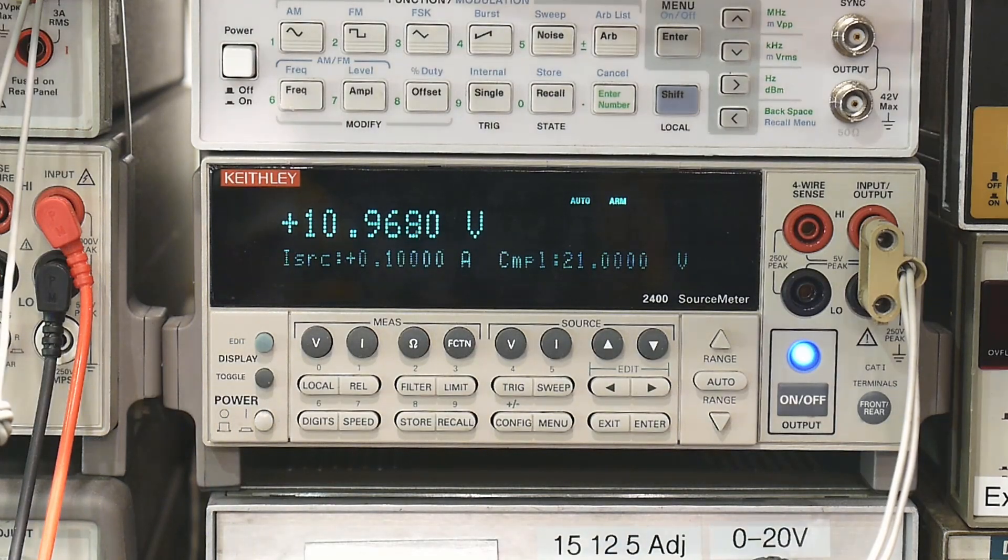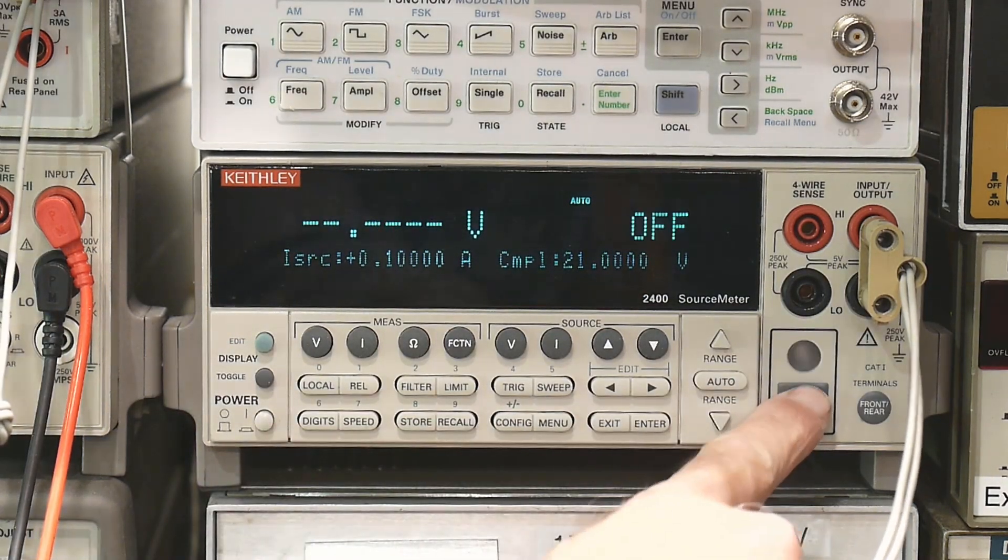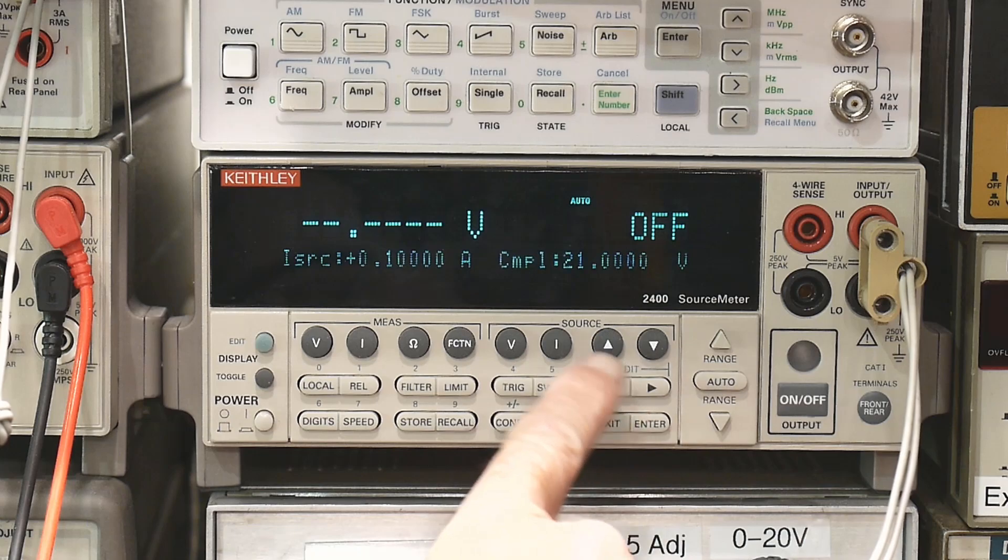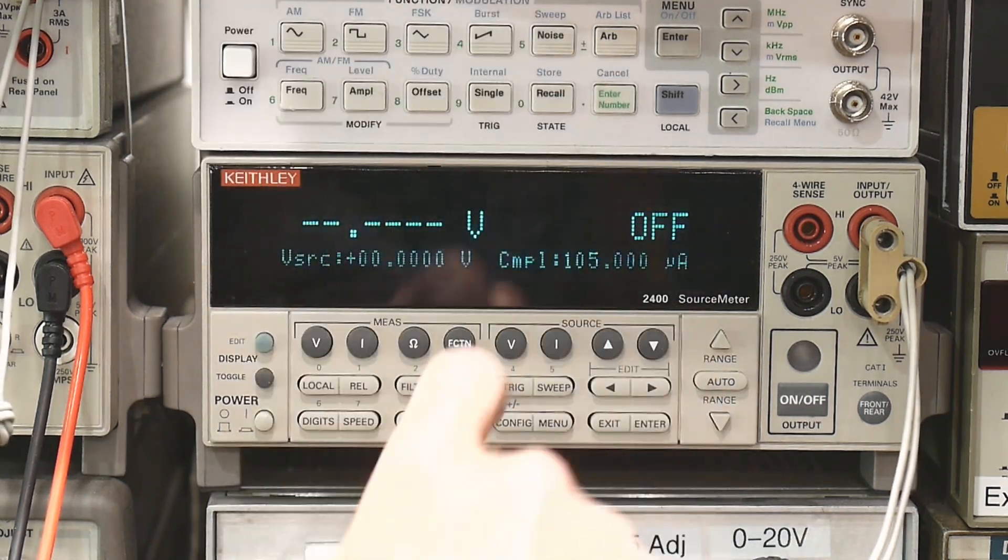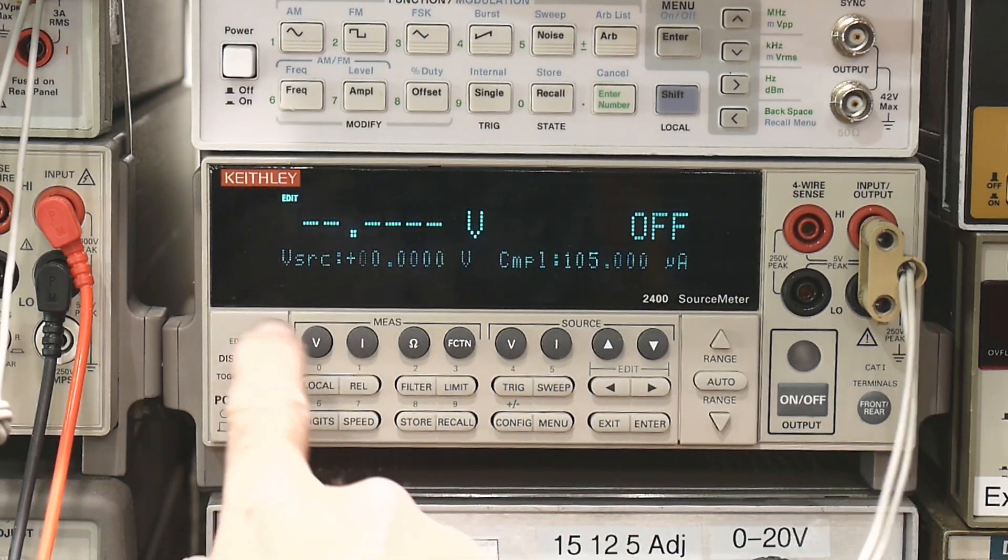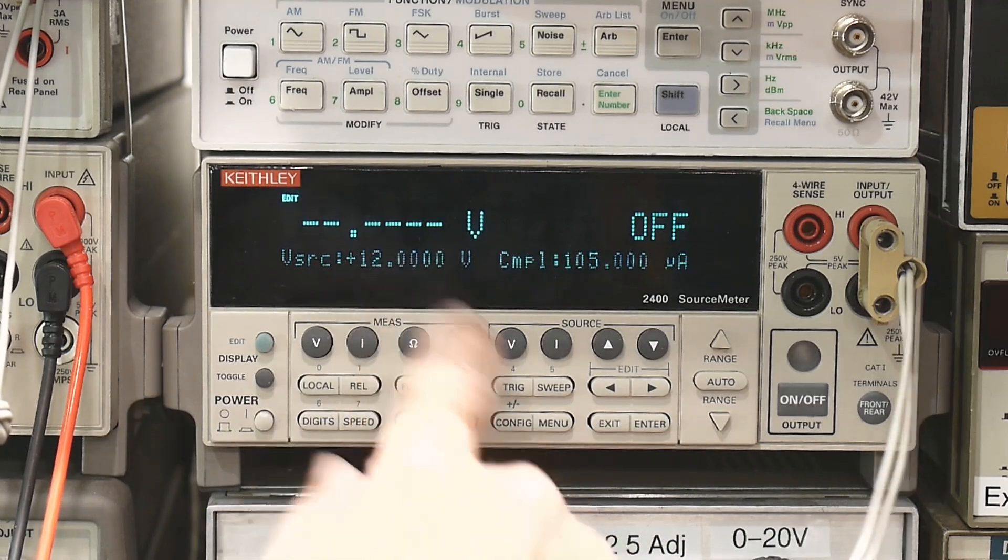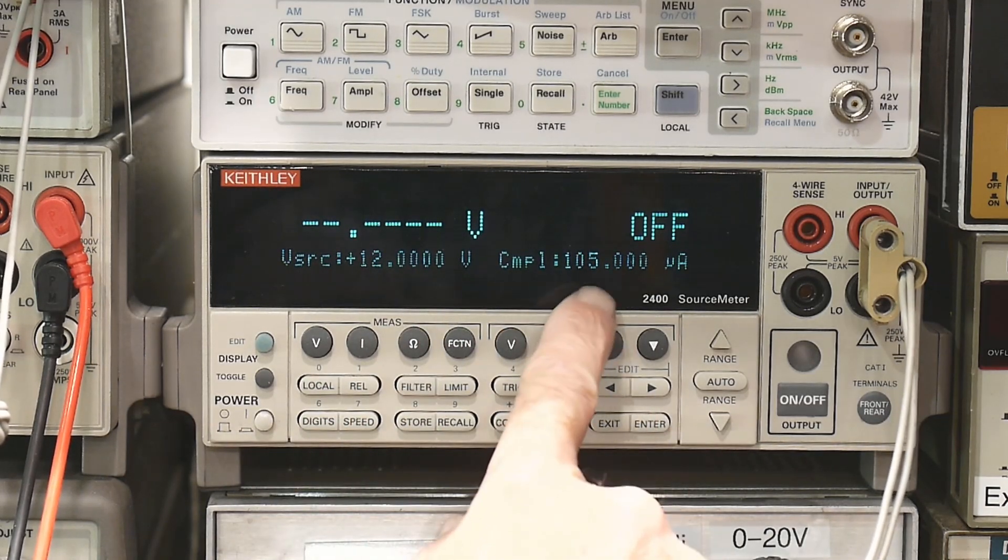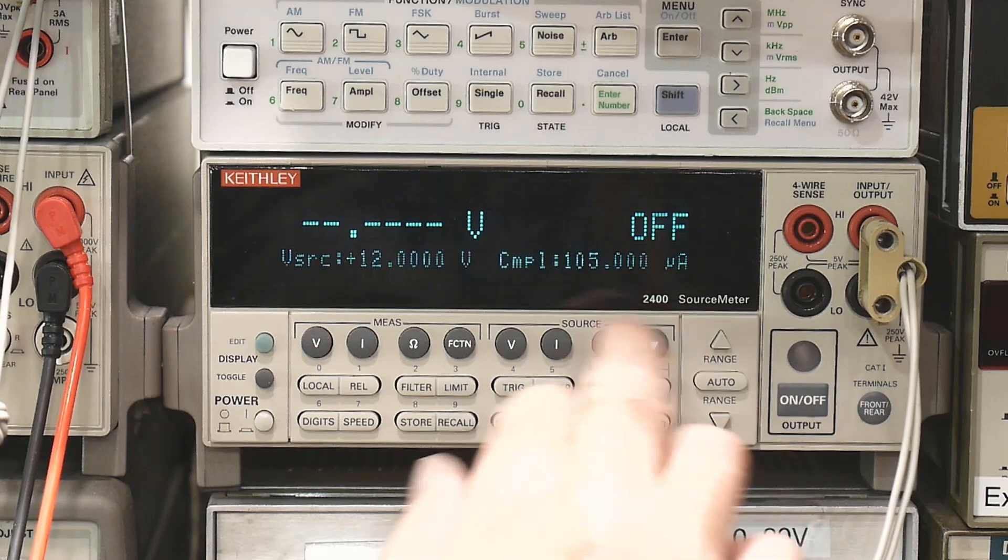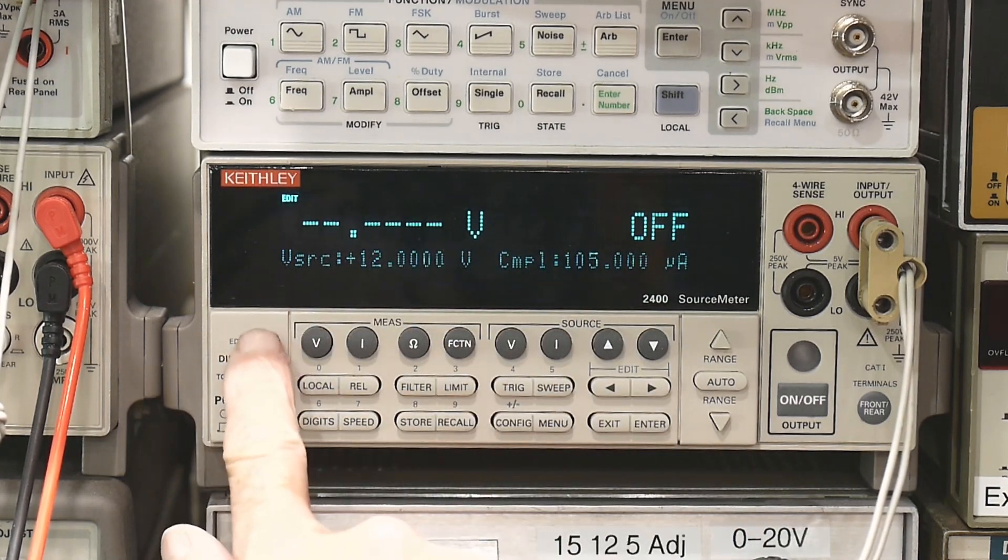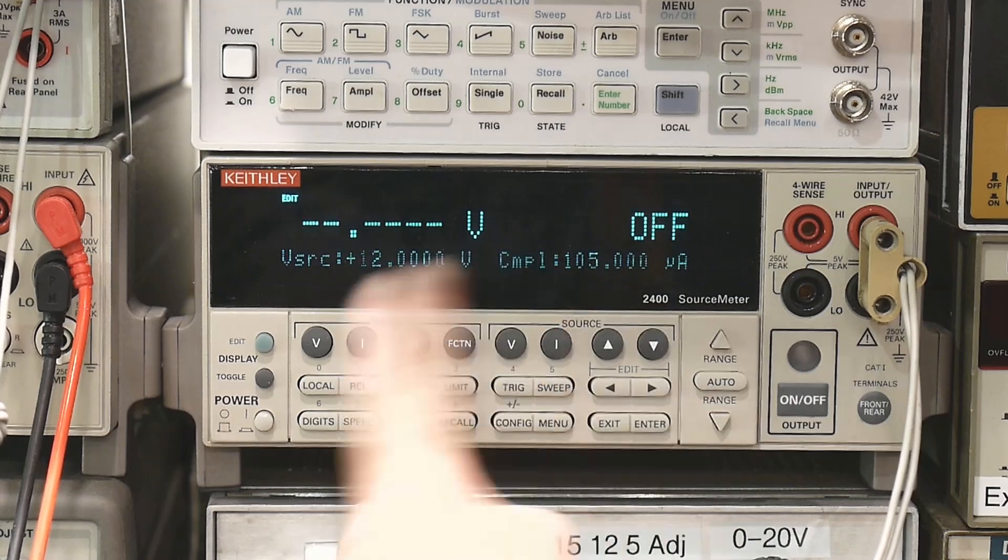Now we could do just the opposite because we know this is a 12 volt device. So we'll turn this off. Now we'll do source voltage. So we're going to source 12 volts. Enter. And we'll have a compliance. We'll go to compliance. When you hit this, it toggles back and forth goes to this point and that one. So hit it again. We're here. We're flashing here.